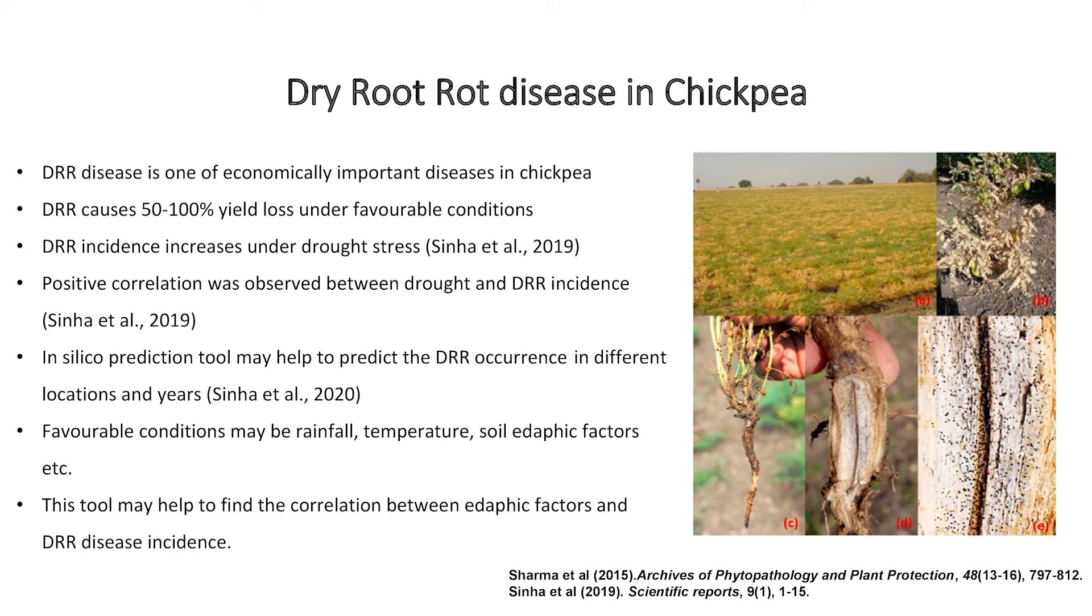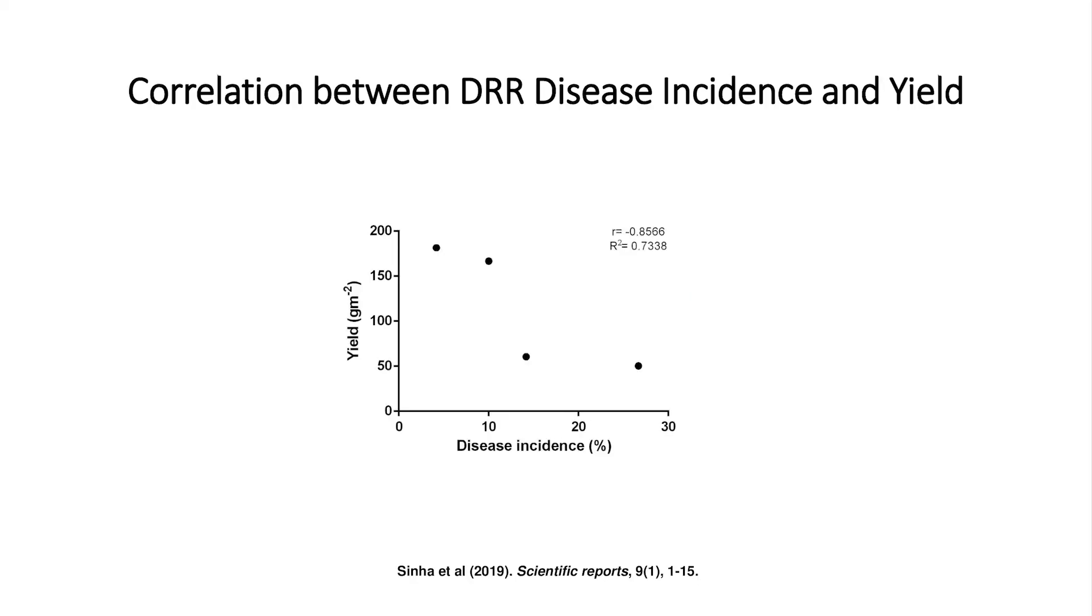There is a necessity to develop an in silico tool that may help to predict the DRR occurrence in different locations and years. Favorable conditions may be rainfall, temperature, soil edaphic factors, etc. This tool may be helpful to find the correlation between the edaphic factors and DRR disease incidence. This graph basically shows the correlation between the dry root rot disease incidence and the yield of chickpea. As you can see, as the dry root rot disease incidence increases, the yield is getting reduced.